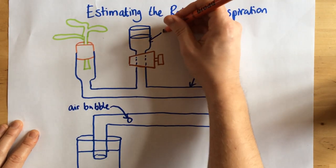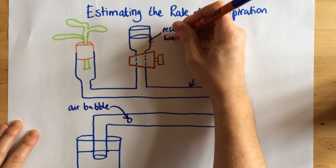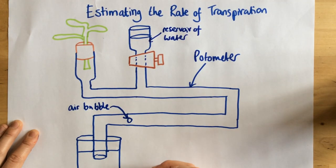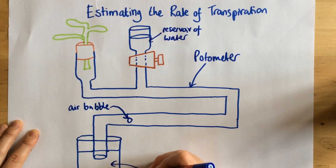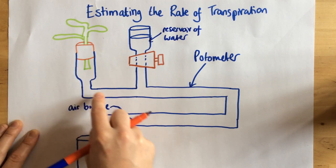So here, for example, here we have a reservoir of water that I'll talk about more in a little bit. And here at the bottom we have a beaker full of water as well. So there's water throughout the whole of these tubes here.